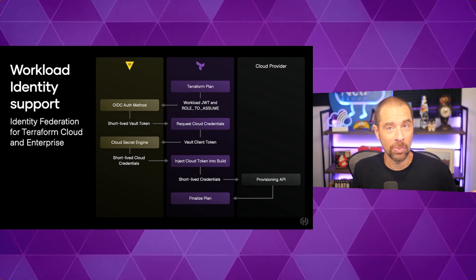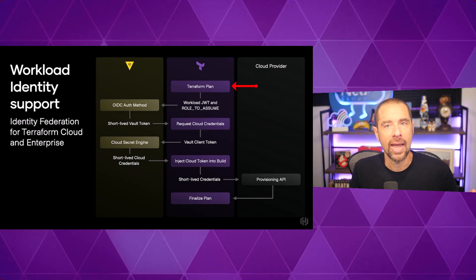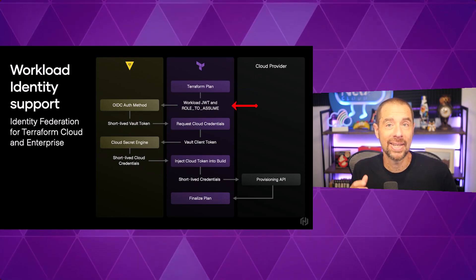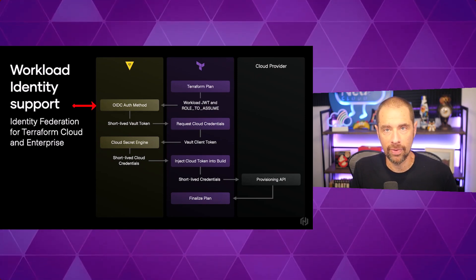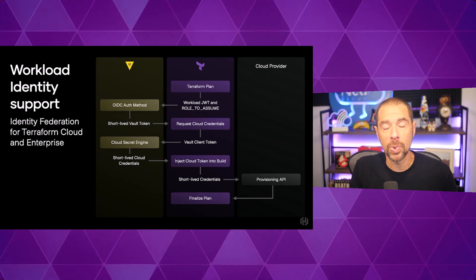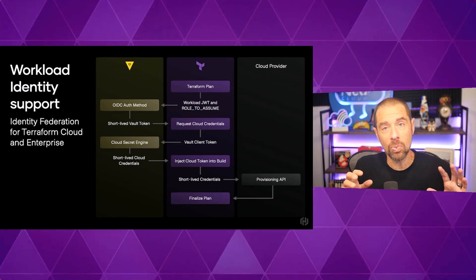If you want to know more about static versus dynamic credentials, the talk I gave at HashiConf Global is now live. During the presentation on Terraform and infrastructure automation at HashiConf Global this year, they announced that workload identity was coming to Terraform Cloud. In this graphic, you can see that when a workspace kicks off a run, that run is given to an agent, and that agent gets a JWT from the identity service within Terraform Cloud. It can then present that token to the cloud provider, which will then generate a new token that gives that workspace provisional access.